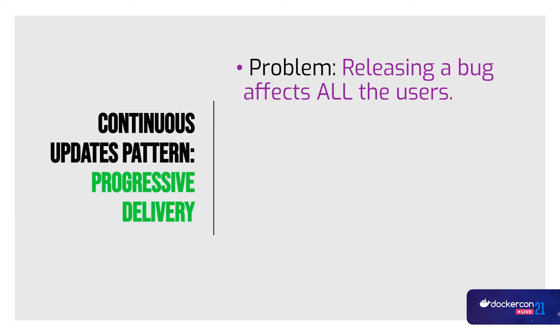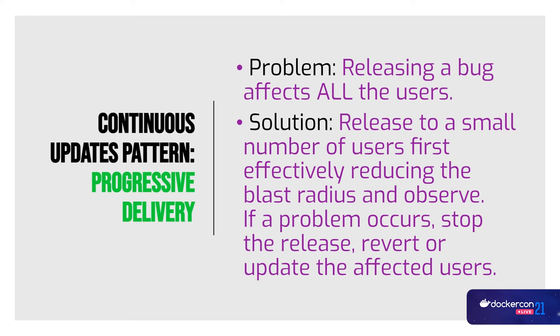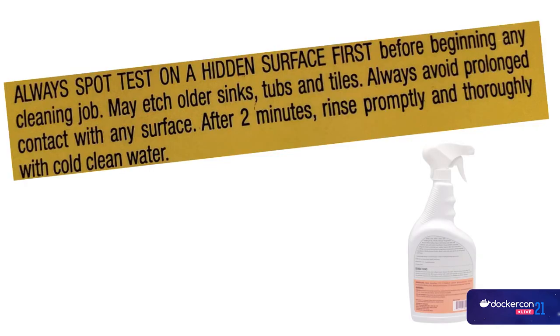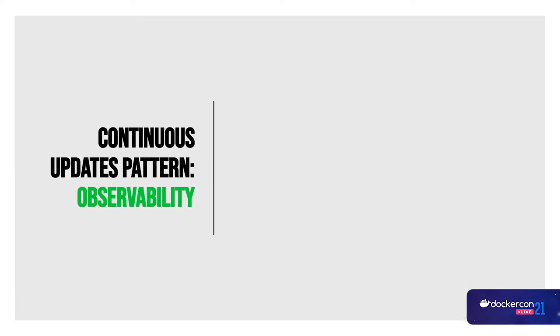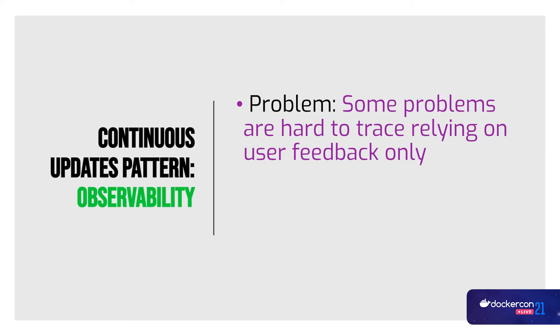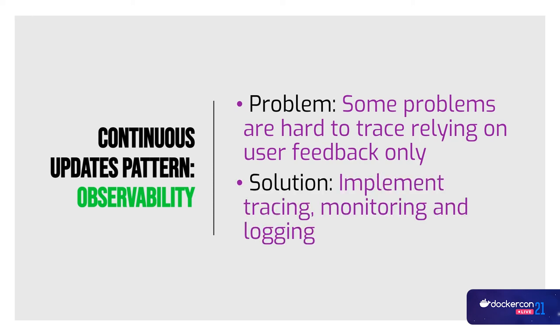Progressive delivery: the problem is that releasing a bug affects all users — exactly like the Cloudflare case where one server affected everyone. The solution is to release to a small number of users first, effectively reducing the blast radius. Observe if a problem occurs, stop the release, and revert the update for affected users — like testing on a hidden surface before using a cleaning product on the whole thing. Observability is super important: implement tracing, monitoring, and logging.